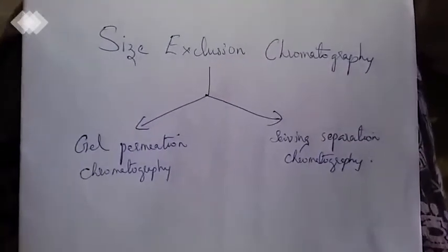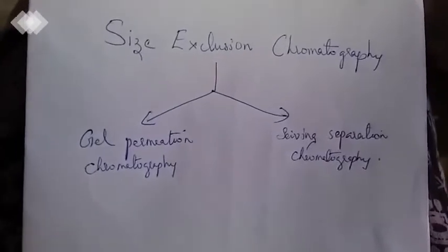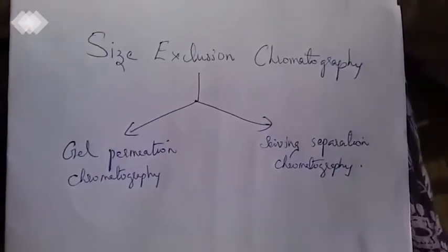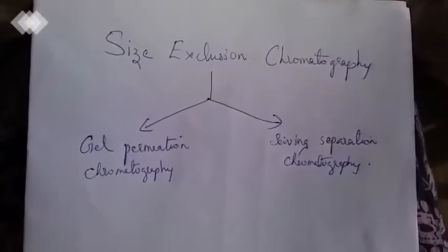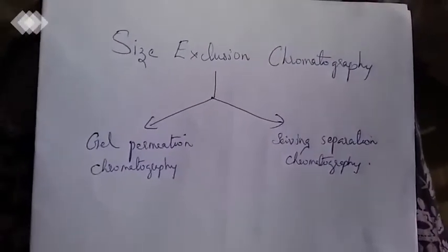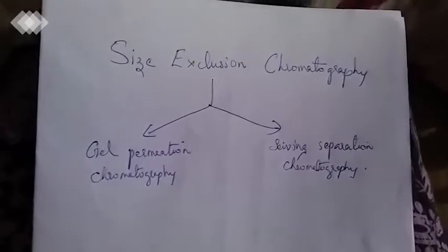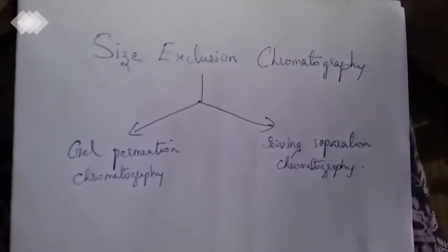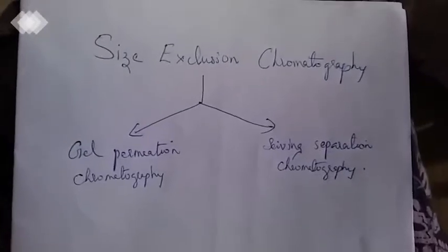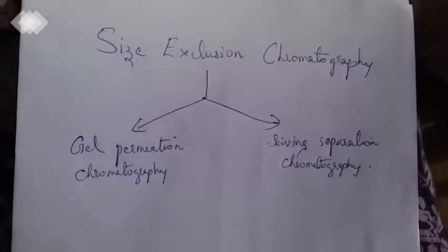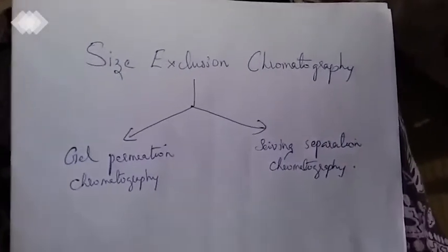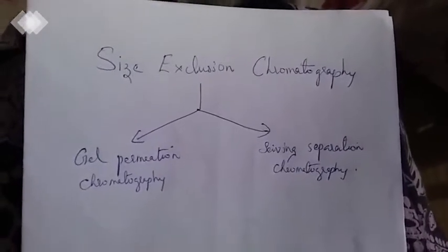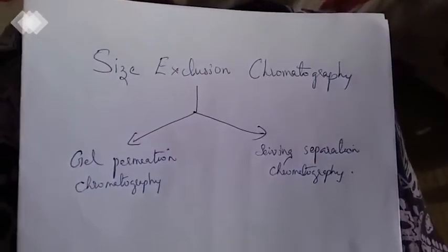We have channels, cavities and channels in the mobile phase. That is why we have separation. In this sieving separation chromatography, we have zeolites — there are permanent cavities and channels.